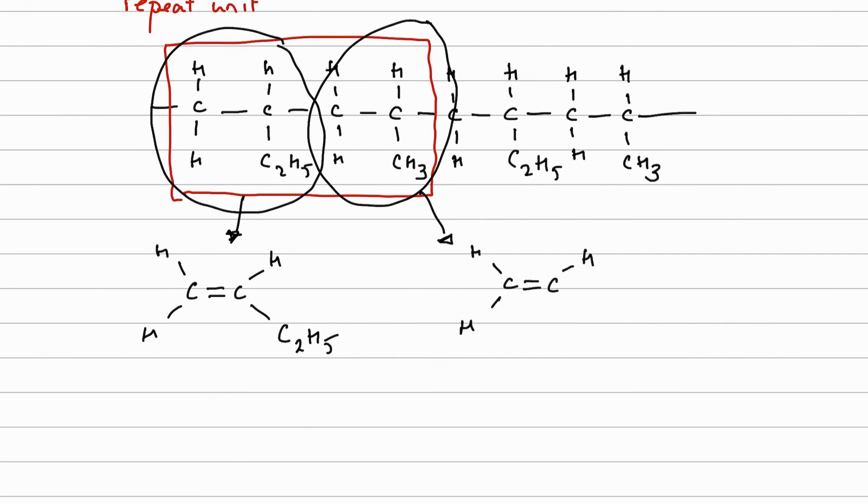Hydrogen and the methyl group. So we've got but-1-ene and propene as our two monomers.